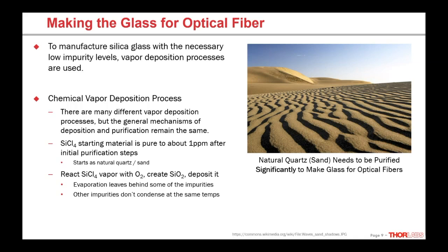What we do to create fiber-quality glass is react this silicon tetrachloride with O2 gas, which creates SiO2 silica that's deposited in a certain location. There are two opportunities for purification: when the silicon tetrachloride evaporates, some impurities are left behind, and when the SiO2 condenses for deposition, some impurities don't condense at those same temperatures. Basically we're taking advantage of the different vapor pressures between silica and impurities to leave the impurities behind and not deposit them where we'll have our fiber glass.